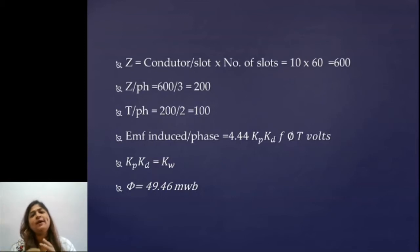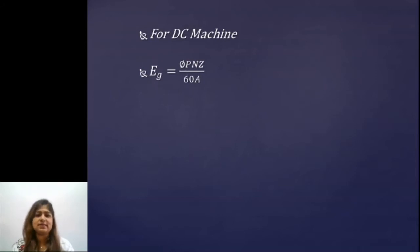What is the next part? If we substitute this flux into DC machine what will be the EMF induced? Let's see the DC machine part. For DC machine EMF induced is given by Φ P N Z upon 60 by A. Now let's talk about each and every parameter in this equation.